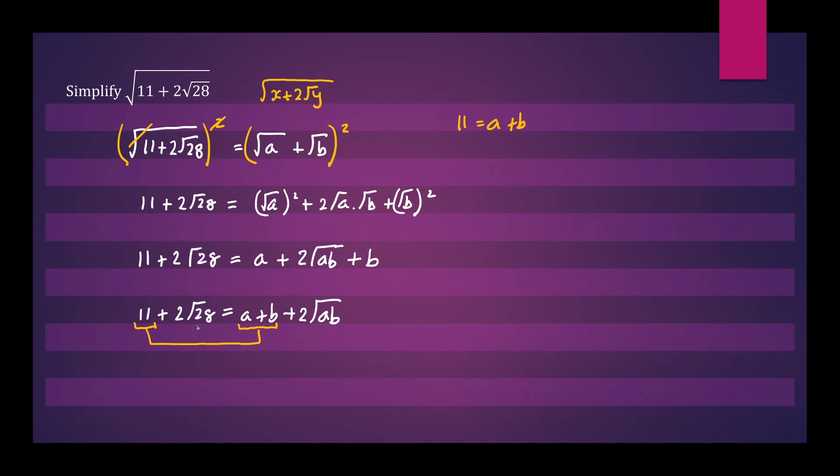And we can also see that 28 will be equal to a times b. So we can write that down: 28 equals ab.